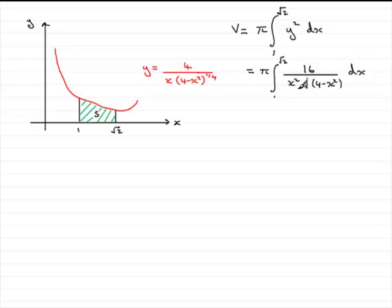Now hopefully this looks fairly similar to what you had before because if we were to now pull out the 16, you would get 16 pi times the integral from 1 to root 2 of 1 over x squared root of 4 minus x squared with respect to x.